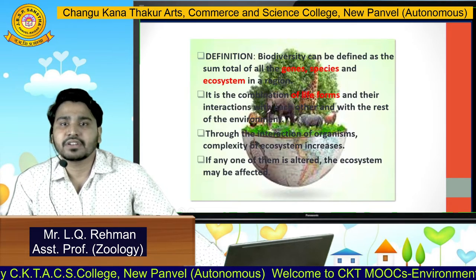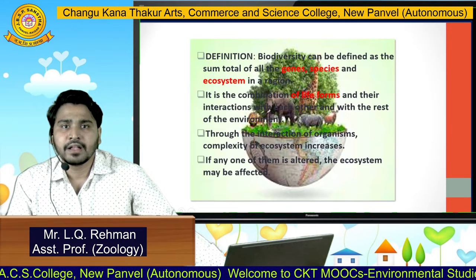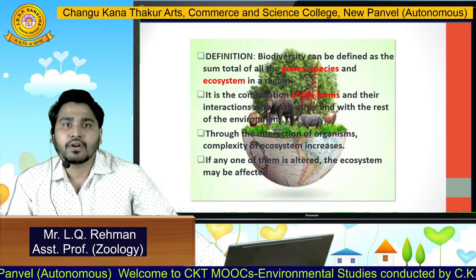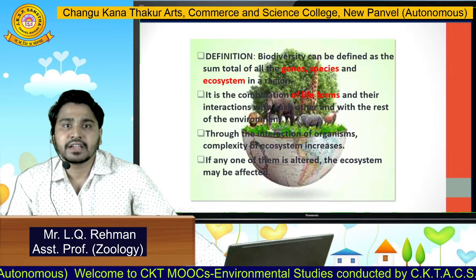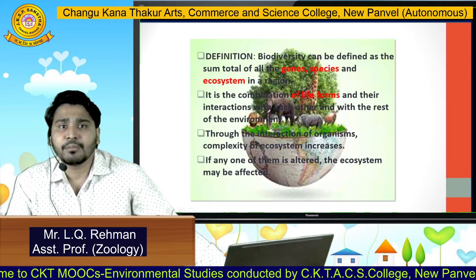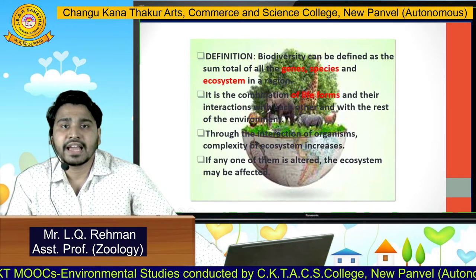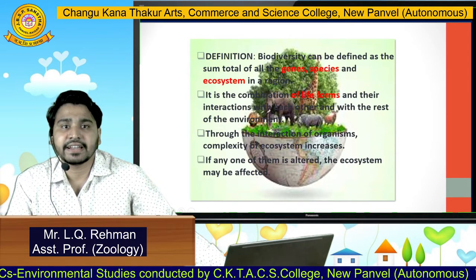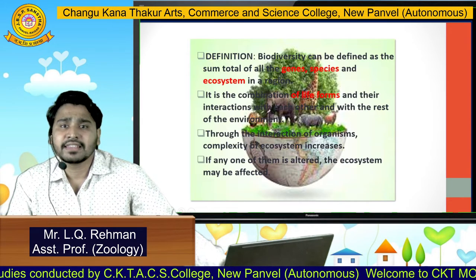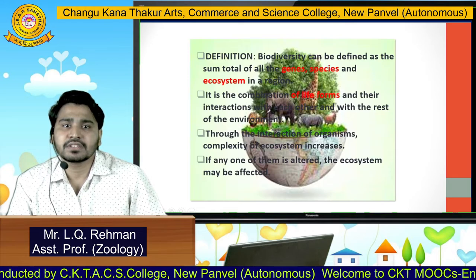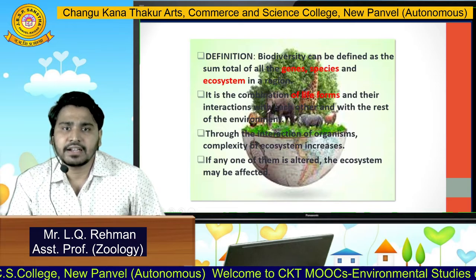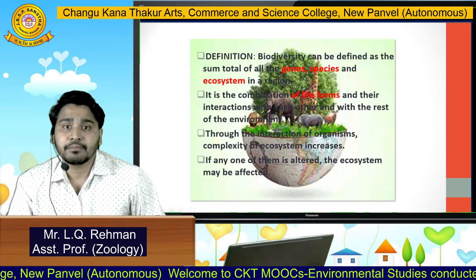What is the definition of biodiversity? Biodiversity can be defined as the sum total of all the genes, species, and ecosystems in a region. It is the combination of all life forms and their interactions between them. Through the interaction of organisms, the complexity of the ecosystem increases, and if any one of them is altered, the ecosystem may be affected.